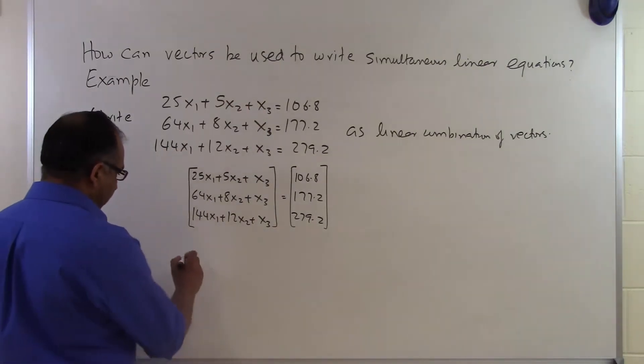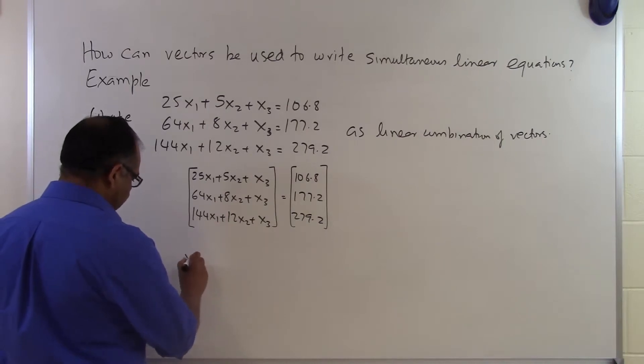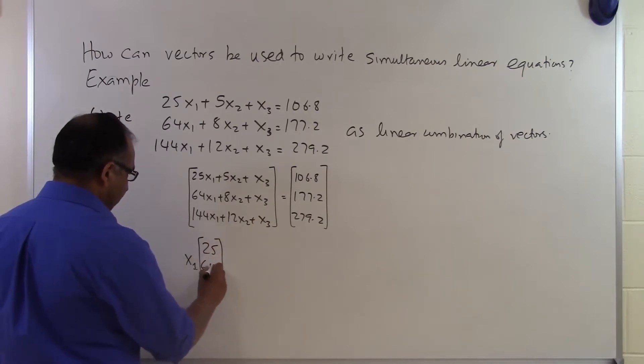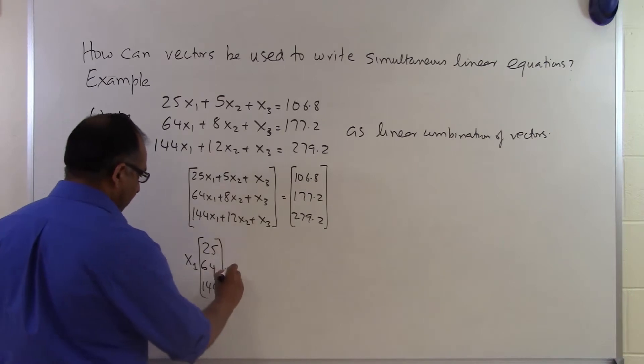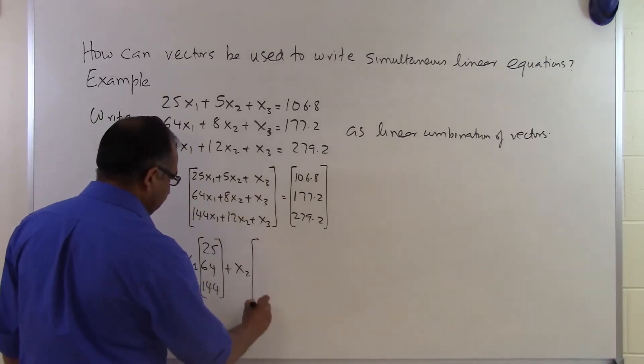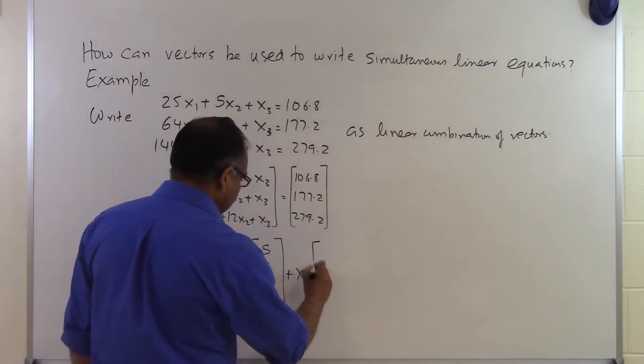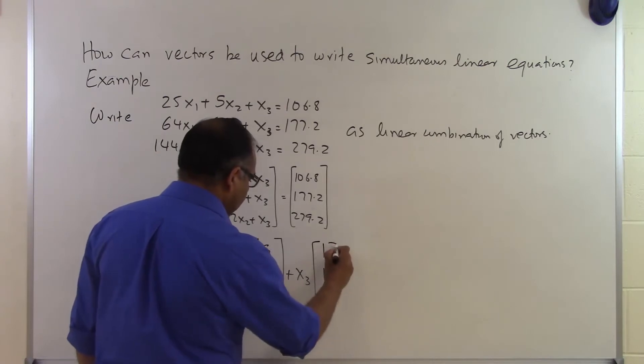But I can further simplify it by breaking this down as a linear combination of three vectors. I can say x1 is right here, so I got 25, 64, and 144 right here. Then x2 is right here, and I got 5, 8, and 12 right here. And then I got x3 here, which is 1, 1, and 1 right here.